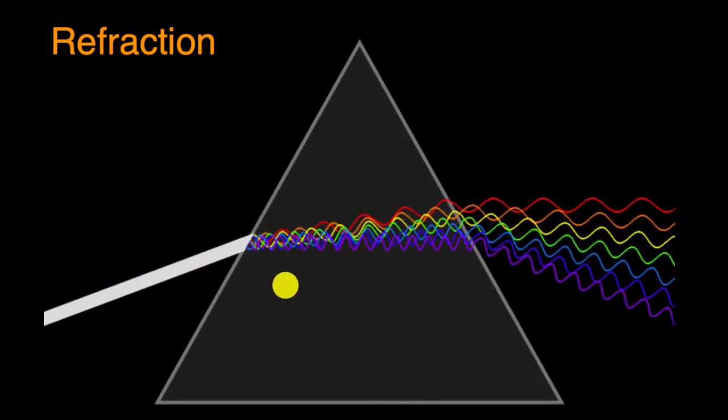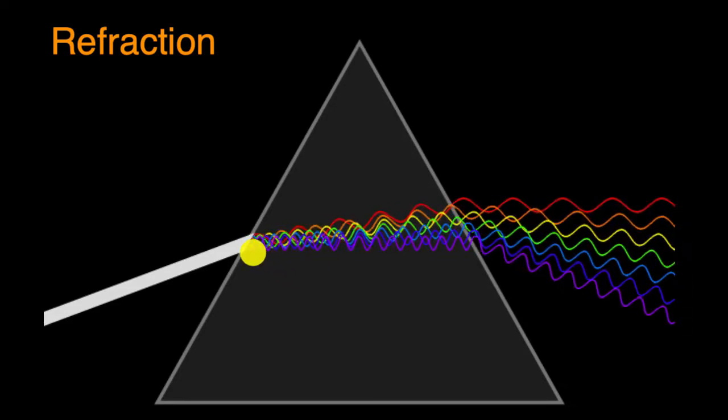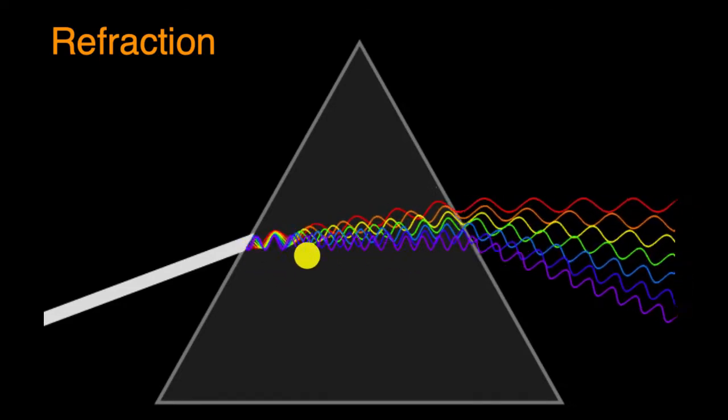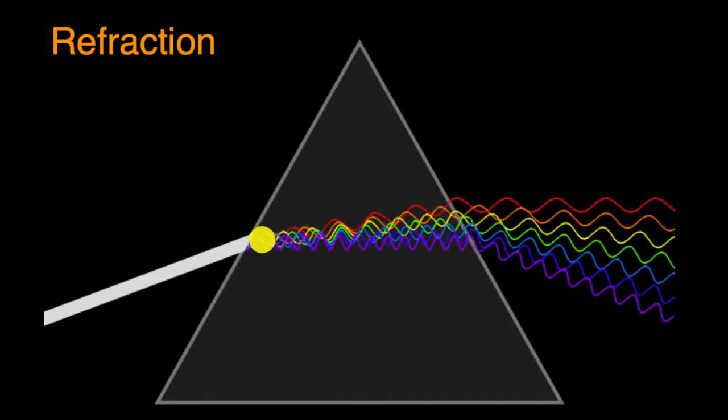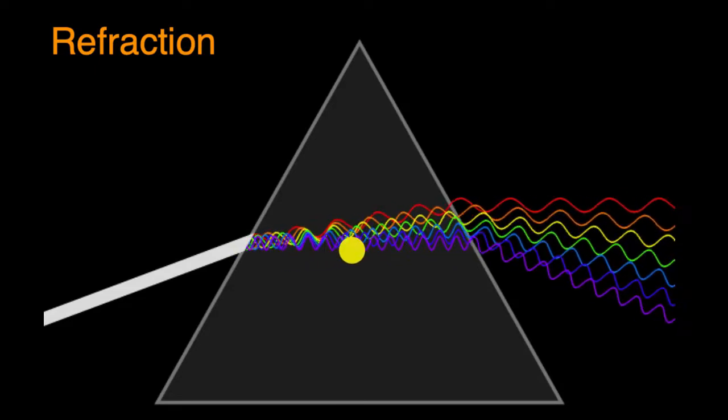But you can see as this light goes from the vacuum to this prism, to this crystal or this glass, the high-frequency light gets bent more, and the low-frequency light, which still gets bent, gets bent less.